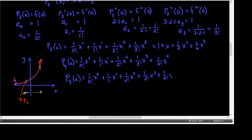Up through the X to the fourth term it looks just like the last answer we got, and now the next one that we add should be — and it is — 1 over 5 factorial times X to the fifth.